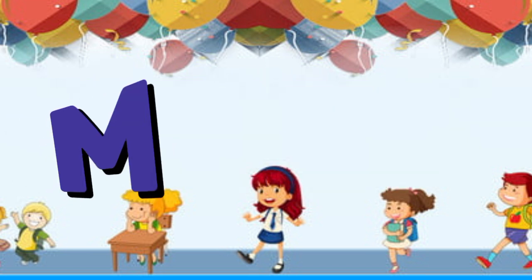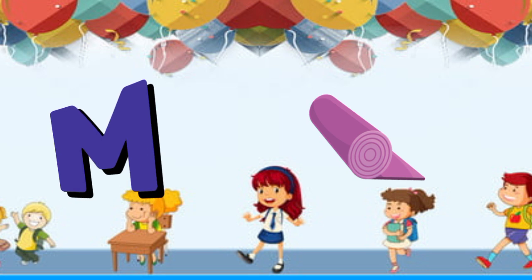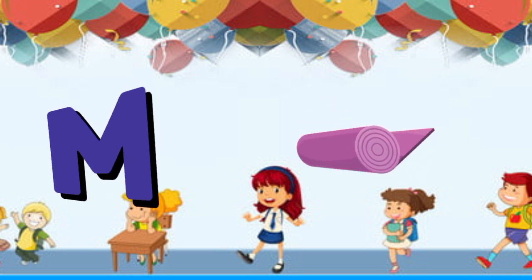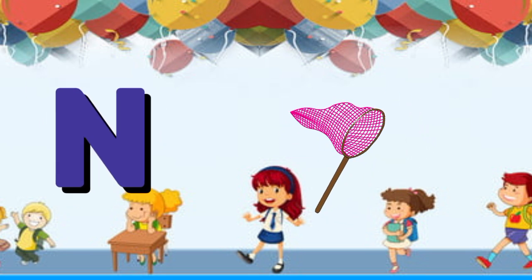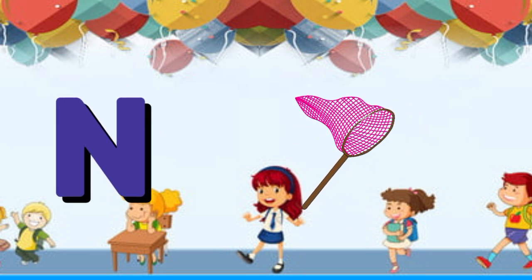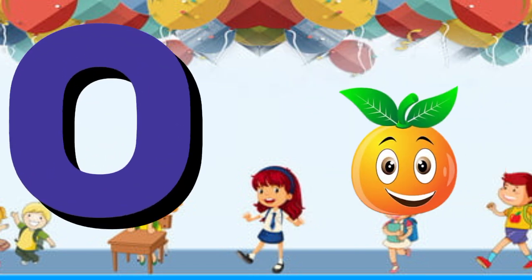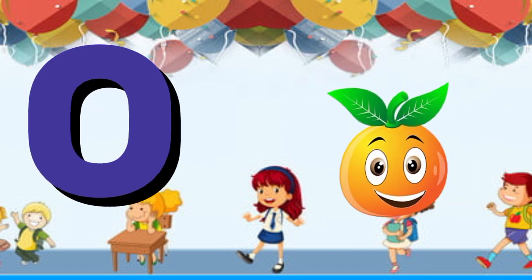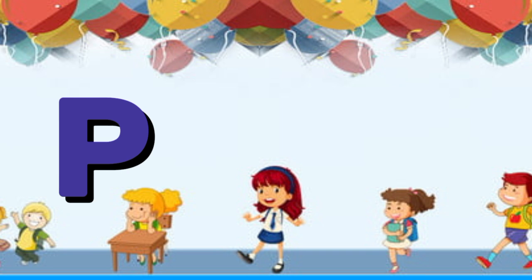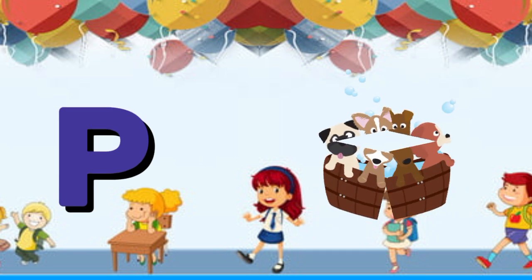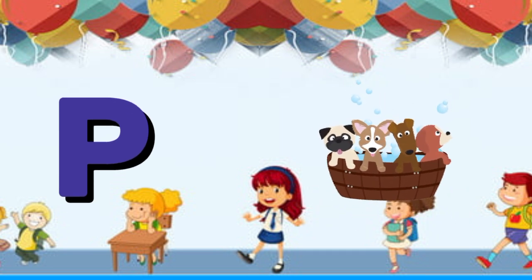M is for mat, m-m-mat. N is for net, n-n-net. O is for orange, o-o-orange. P is for pet, p-p-pet.